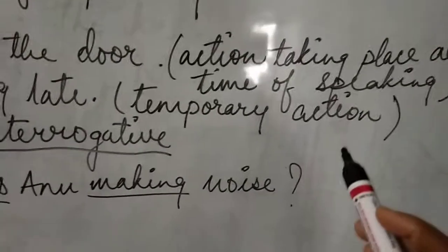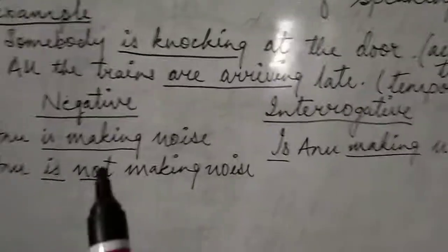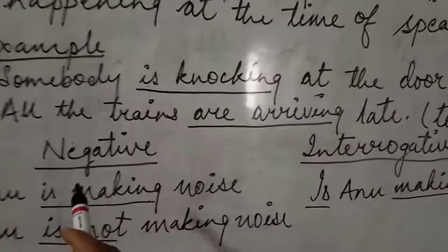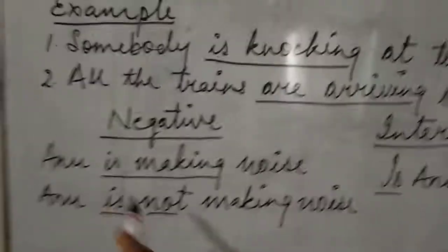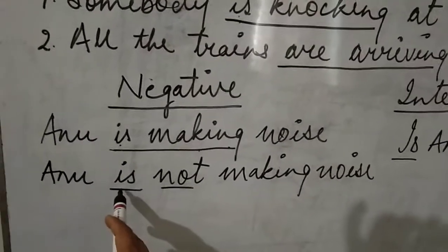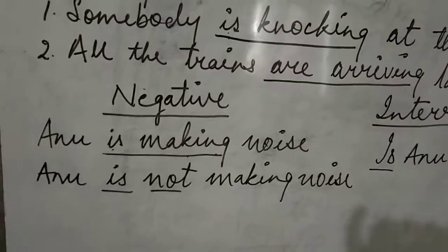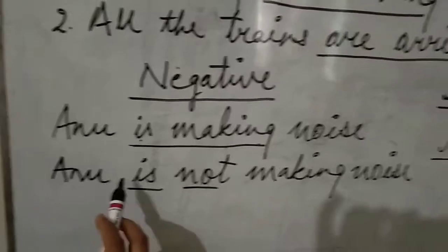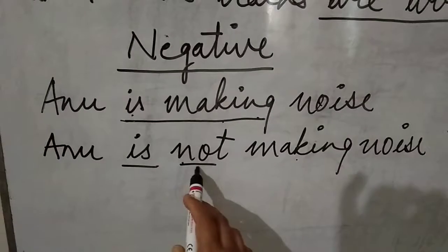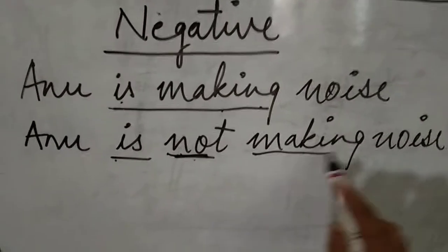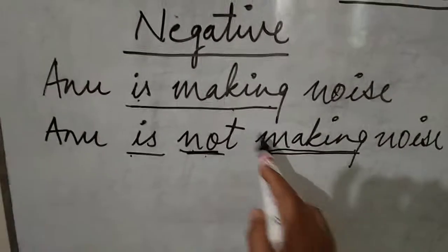It is not an action taking place at the time of speaking. Now to make it negative in present continuous form, we underline the auxiliary verb as well as the main verb. It has become easy since we already have an auxiliary verb — unlike simple present tense where we use do/does. For example: 'Anu is not making noise.' The word 'not' comes between the auxiliary verb and the main verb.